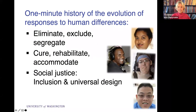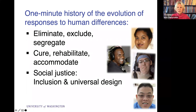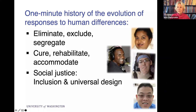Here's a one-minute history lesson on the evolution of responses to human differences, including disabilities. In some cultures still today, but mostly many years ago, people with disabilities were eliminated, excluded, or segregated. In the middle of the last century, there was a movement toward working with the person with a disability to either cure them, rehabilitate them, or provide an accommodation — all three focused on the individual. With more current thinking, a social justice or civil rights model, the response is full inclusion, and universal design is the practical approach that helps us get there.